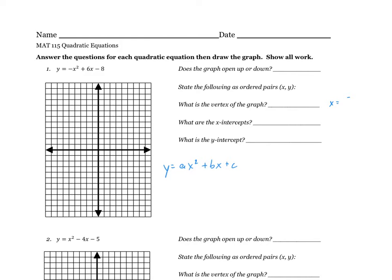x equals negative b over 2a. For the x-intercepts, that's where we are going to solve the quadratic equation.